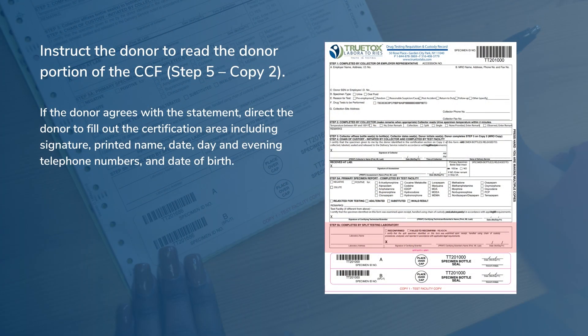Instruct the donor to read the donor portion of the CCF, Step 5, copy 2. If the donor agrees with the statement, direct the donor to fill out the certification area, including a signature, a printed name, date, day and evening telephone numbers, and date of birth.